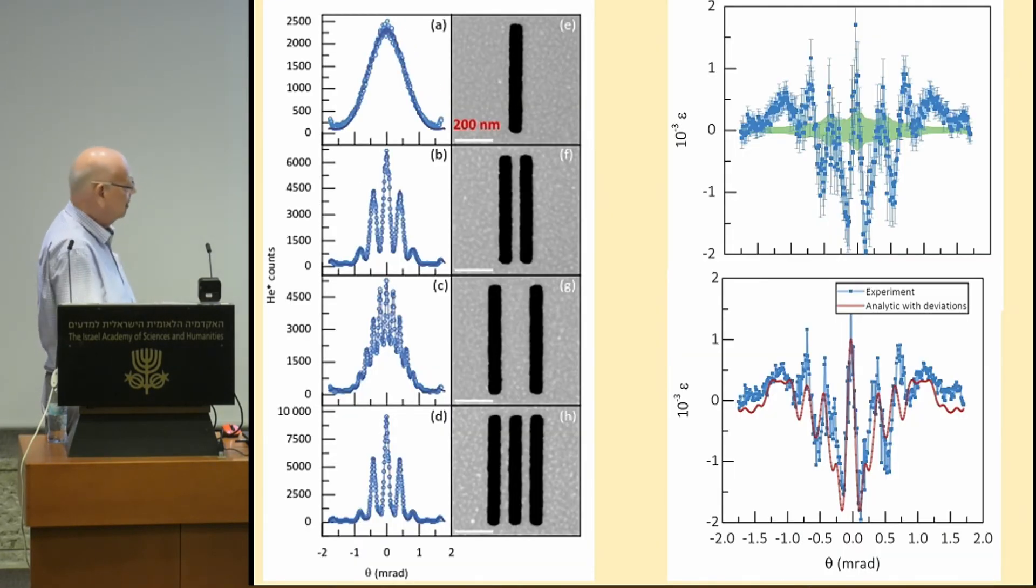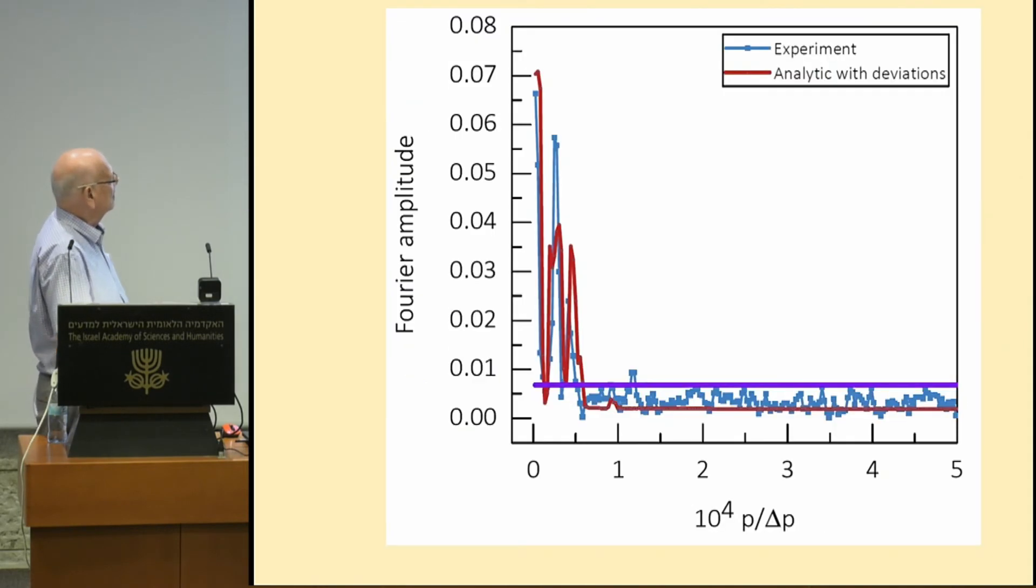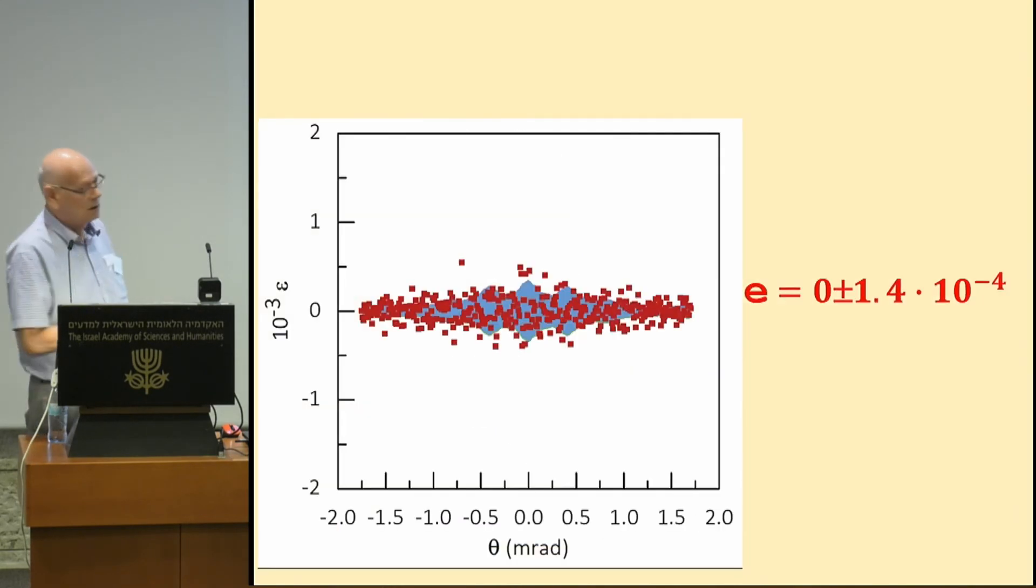And once you do that, then you get the red curve. And you see, we could reproduce most of the non-zero contributions. So the next stage was, okay, let us subtract them. Let us do the Fourier analysis and filter out those that we are accounting for. So after filtering out, this is the result we got.